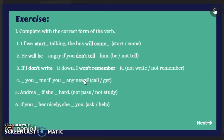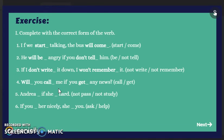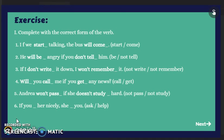In number four we have a question and we start with the result, so in the beginning we need will, and in the second part we need the present simple. The answer is: will you call me if you get any news? Because it's a question we have will, subject, then verb in base form. Number five: Andrea — if she — again we start with the result then the condition, both verbs negative — not pass and not study. The answer is: Andrea won't pass if she doesn't study hard. We use doesn't because the subject is third person — she.